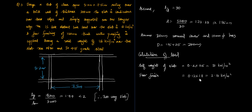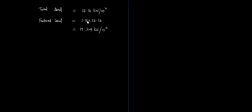Floor finish: 0.12 m thickness, for 1 meter by 1 meter taking unit weight of 18 kilo Newton per meter cube, I will get it as 2.16 kilo Newton per meter square. Live load is 6 kilo Newton per meter square as given. So the total load is 13.16 kilo Newton per meter square and the factored load is 1.5 into 13.16, that is 19.74 kilo Newton per meter square.